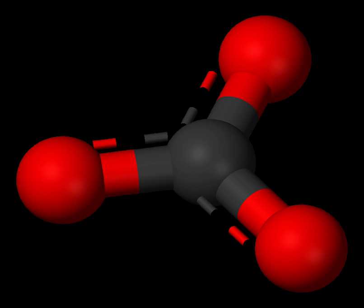The carbonate ion is the simplest oxocarbon anion. It consists of one carbon atom surrounded by three oxygen atoms, in a trigonal planar arrangement, with D3h molecular symmetry. It has a molecular mass of 60.01 grams per mole and carries a total formal charge of minus two.